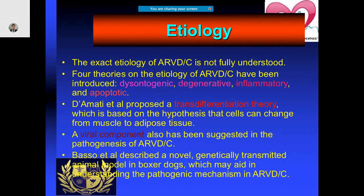Coming to etiology, four theories have been proposed: dysontogenic, degenerative, inflammatory, and apoptotic. A renowned researcher, D'Amati, proposed the transdifferentiation theory, which means cells can change from muscle to adipose tissue — this is why in those segments of the heart you see adipose tissue rather than muscular tissue. Some have also suggested viral infection and genetic causes.